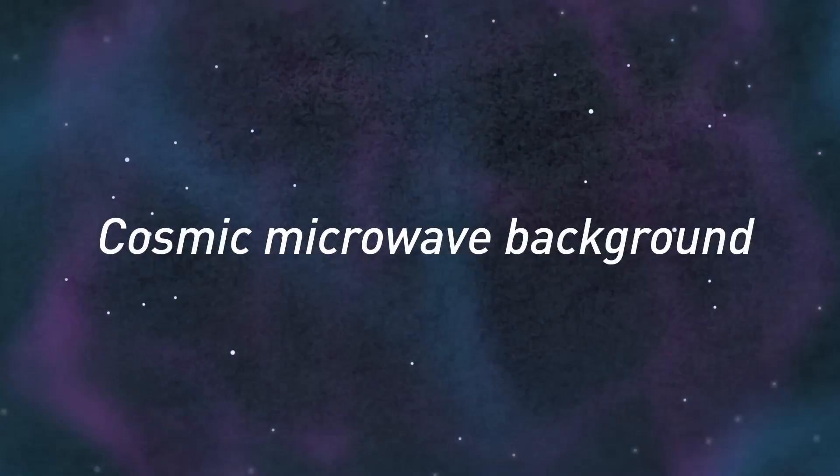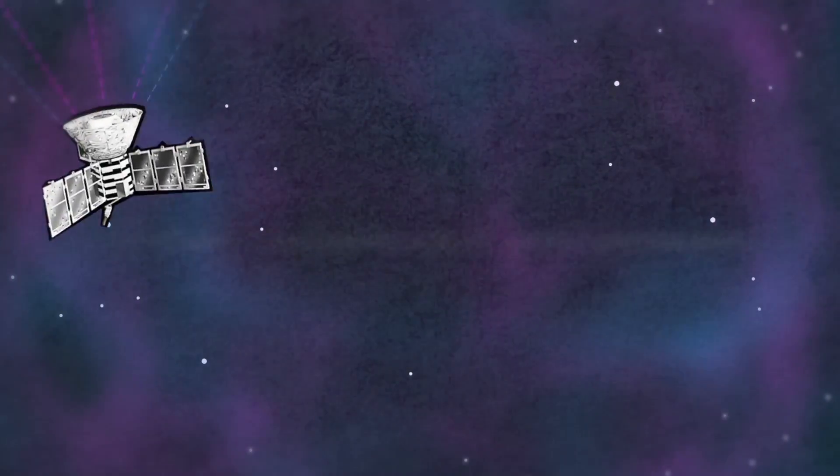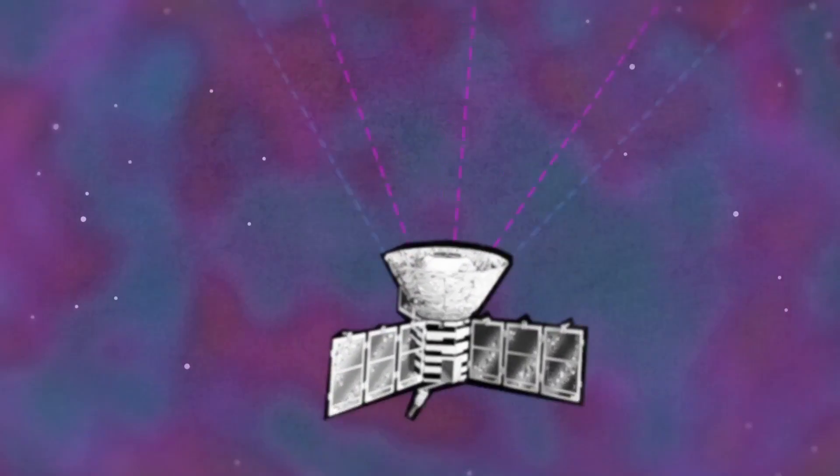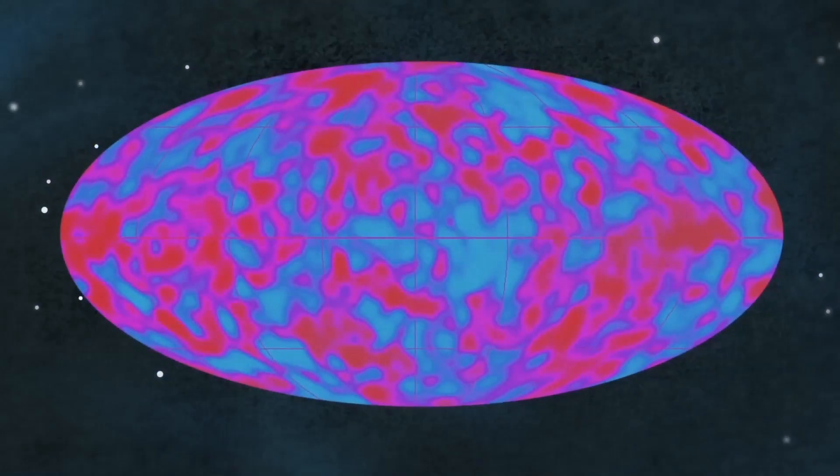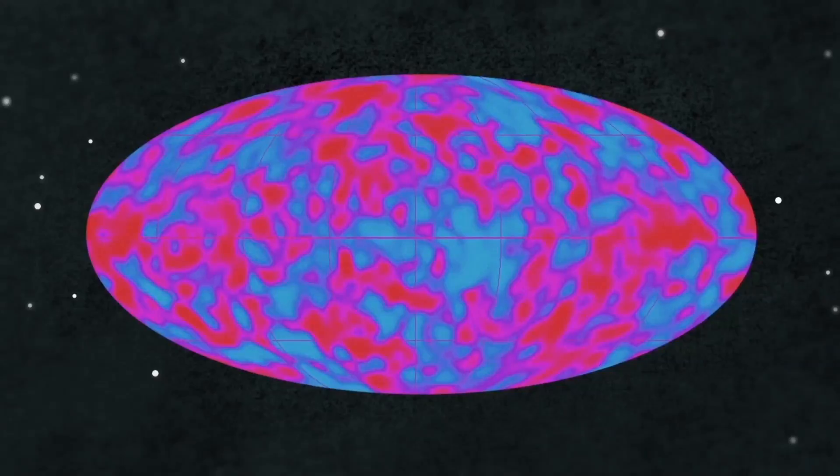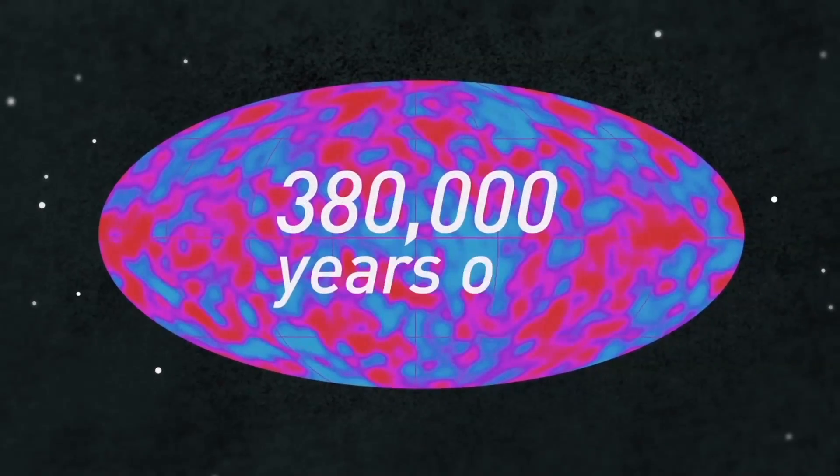That buzz, known as the Cosmic Microwave Background, is the oldest light in the universe. Launched by NASA in 1989, the Cosmic Background Explorer made the first map of this ancient light, revealing a snapshot of the universe when it was just 380,000 years old.